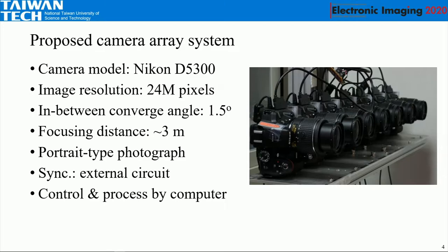This is our prototype. We use a Nikon D5300 camera model, and we use seven cameras. The image resolution is up to 24 megapixels. The coverage angle between cameras is around 1.5 degrees, and the focusing distance is around 3 meters. We designed it only for portrait photography. Synchronization is handled by an external circuit, and all control and processing is executed by one computer.